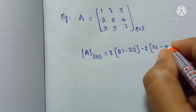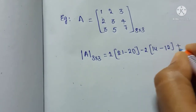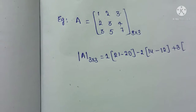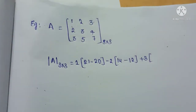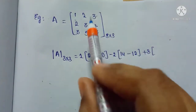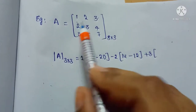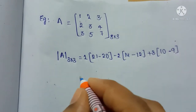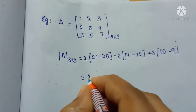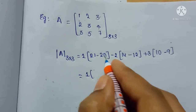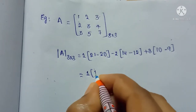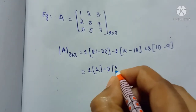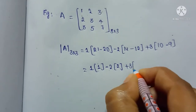...plus 3 into (2×5 = 10 minus 3×3 = 9). So we get: 1 into (21 − 20) = 1, minus 2 into (14 − 12) = 2, plus 3 into (10 − 9) = 1.